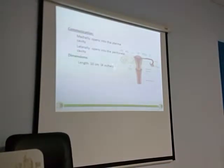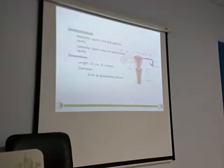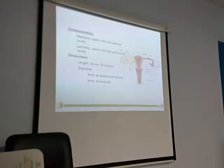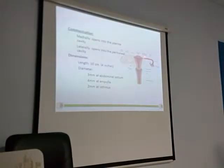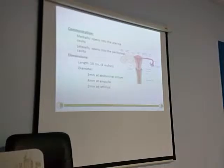Coming to the dimensions: it is almost 4 inches, or 10–15 centimeters in length. And the diameter of the different parts: in the case of the terminal ostium, that is the infundibulum, it will be 3 millimeters. In the case of the ampulla, it is the largest — even though the infundibulum looks larger, the biggest diameter will be the ampulla because that is where fertilization takes place. The next part is the isthmus. Isthmus means the narrow part, so it should be narrow — it is almost 2 millimeters. But this is not the narrowest part.